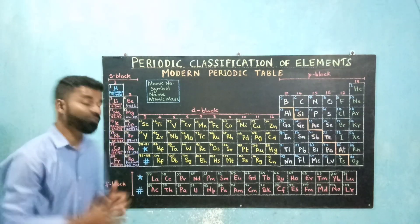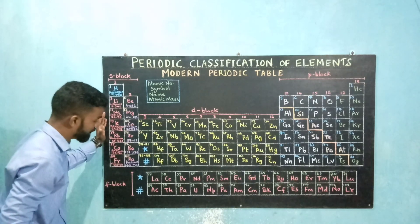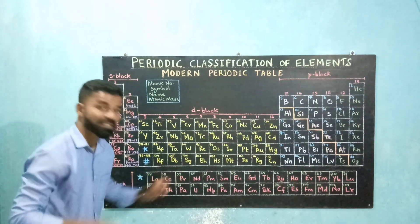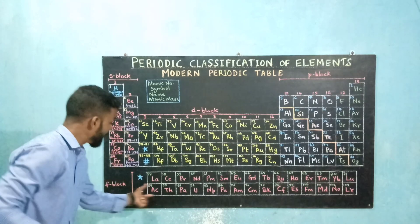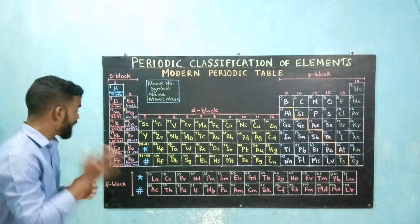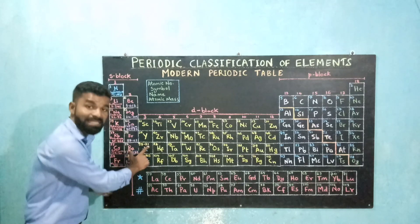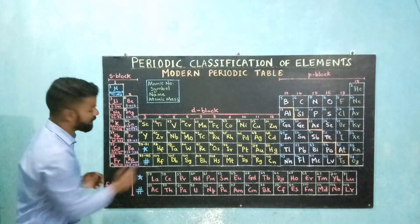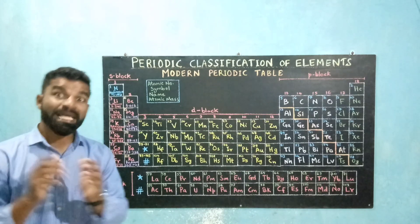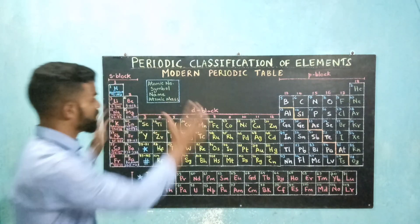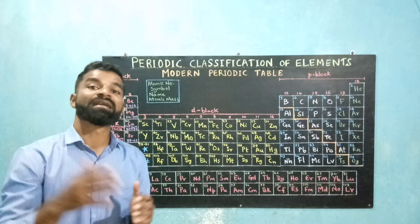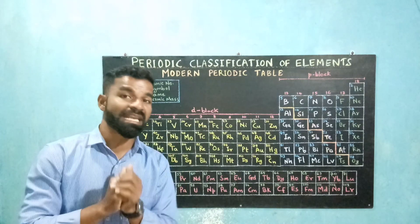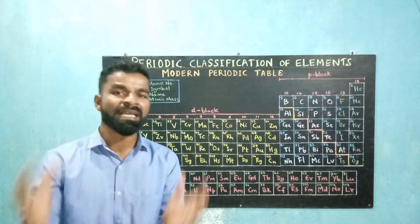Apart from these 7 horizontal rows, there are 2 more rows placed at the bottom of the modern periodic table. The first row is termed as the lanthanide series and the second row is termed as the actinide series. The elements with atomic number from 57 till 71 are placed in the lanthanide series, and the elements from atomic number 89 till 103 are placed in the actinide series. There are a total of 118 boxes in the entire periodic table, and all 118 elements have been discovered, so the modern periodic table is completely filled.